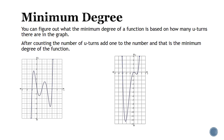The minimum degree of a polynomial function can be found by looking at how many u-turns are in the graph. For the first graph, we have 1, 2, 3, 4 u-turns, which means that the minimum degree of this function is going to be 4 plus 1, or 5.